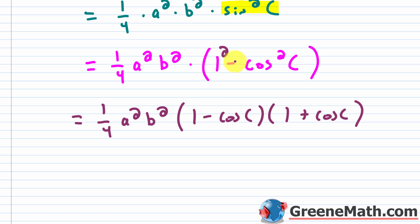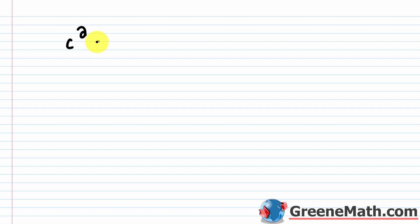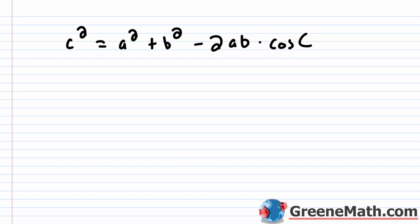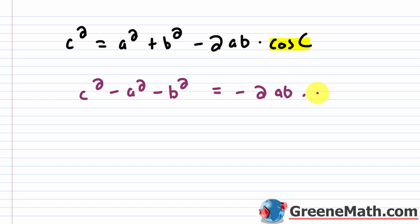We need to figure out what the cosine of C is, so we'll use the law of cosines involving angle C: C squared equals A squared plus B squared minus 2AB times cosine C. We want to solve for cosine C, so we'll subtract A squared and B squared from each side, giving us C squared minus A squared minus B squared equals negative 2AB times cosine C.